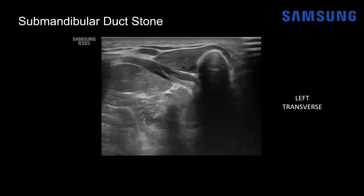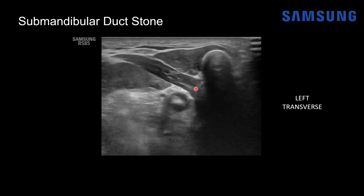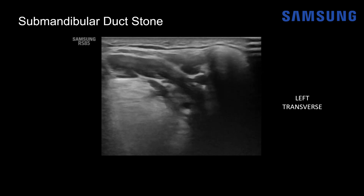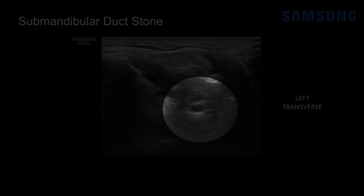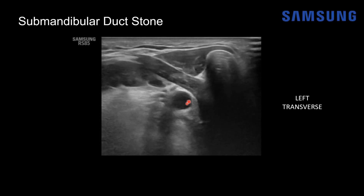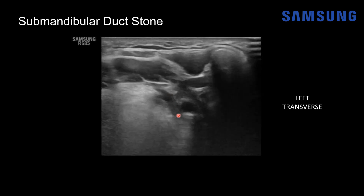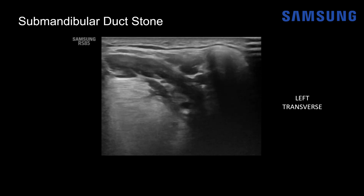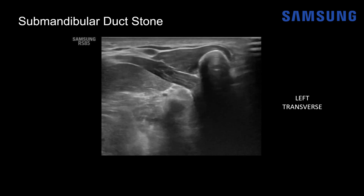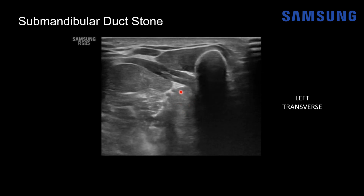Now that we understand floor of mouth sonographic anatomy, let's return to the submandibular duct stone clip. Again left transverse: we see the mylohyoid muscle, the geniohyoid, the mandible, and part of the anterior belly of the digastric. As we sweep posteriorly, the submandibular gland comes into view — located between the mylohyoid and the mandible. Using the hyoglossus as a landmark, we identify the sublingual space between the hyoglossus and the mylohyoid, and there we see that dilated duct. Sweeping back and forth, we can see the stone. The hyoglossus is a great landmark to find the submandibular duct in the sublingual space; the duct itself is located medial to the sublingual gland, which is also in that sublingual space.